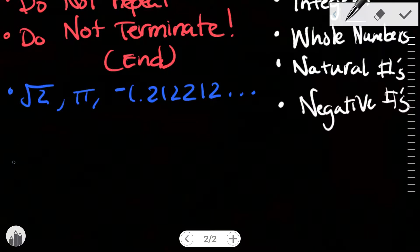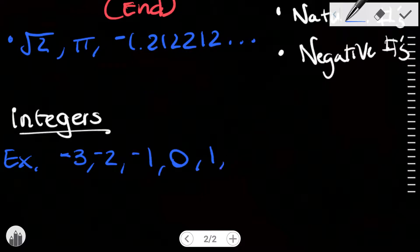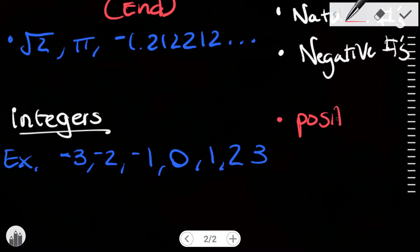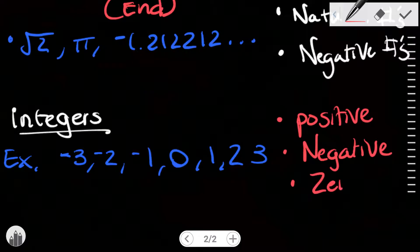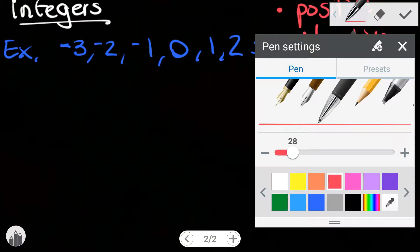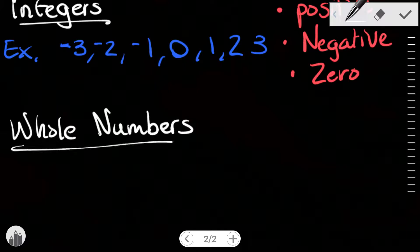Let's expand on integers. Integers can be negative 3, negative 2, negative 1, 0, 1, 2, 3 — so integers can be positive, negative, as well as zero.